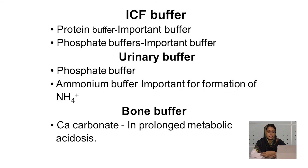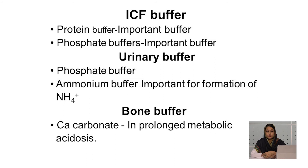There are some intracellular fluid (ICF) buffers: protein buffer and phosphate buffer. Urinary buffer examples — which are very important — are phosphate buffer and ammonium buffer. There is also a bone buffer, which is calcium carbonate.